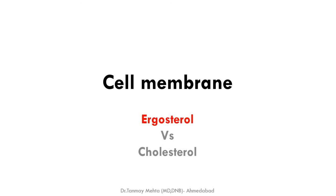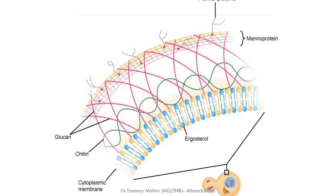Cell membrane. The cell membrane of fungus is made up of argosterol, while that of prokaryotic organisms or bacteria are made up of cholesterol. As you can see, argosterol molecules are present in the cytoplasmic membrane.